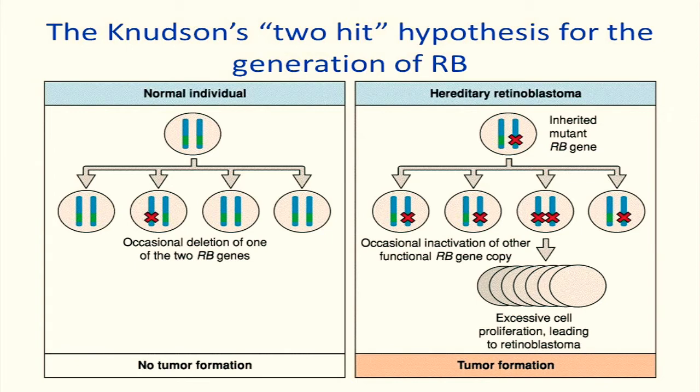One copy of the RB gene was lost due to loss of a part of the 13th chromosome. A mutation may have inactivated the remaining copy. This is the reason for bilateral retinoblastoma in the child.